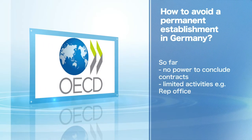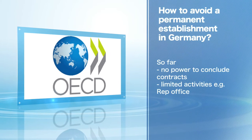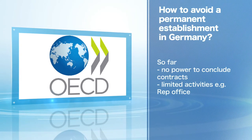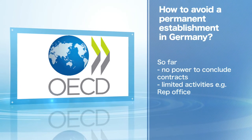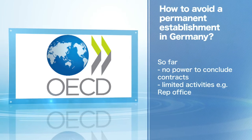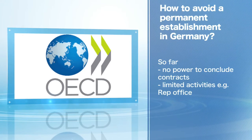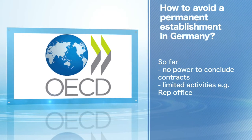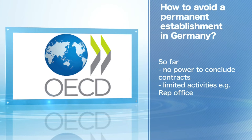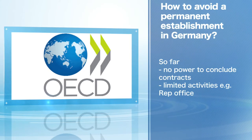According to the old rules, it is possible to avoid a permanent establishment if the agents have no power to conclude contracts and the German activities are very limited — for example, providing general information and not having a German office.